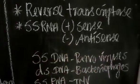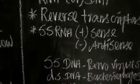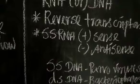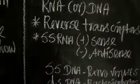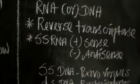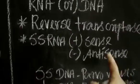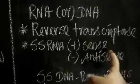What is the differentiation? The sense is coding. The coding strand is the sense RNA. The anti-sense is non-coding strand. It is the coding strand.